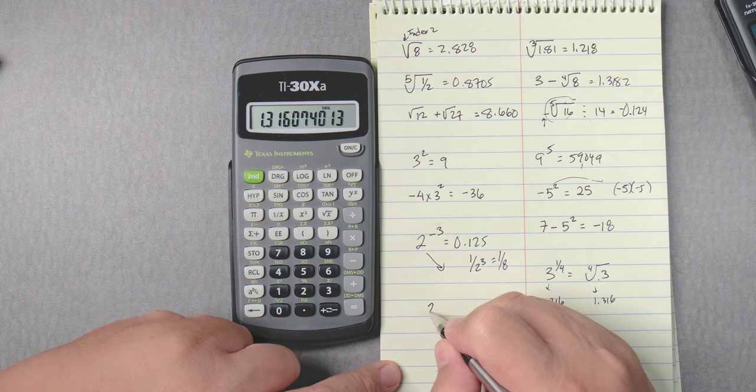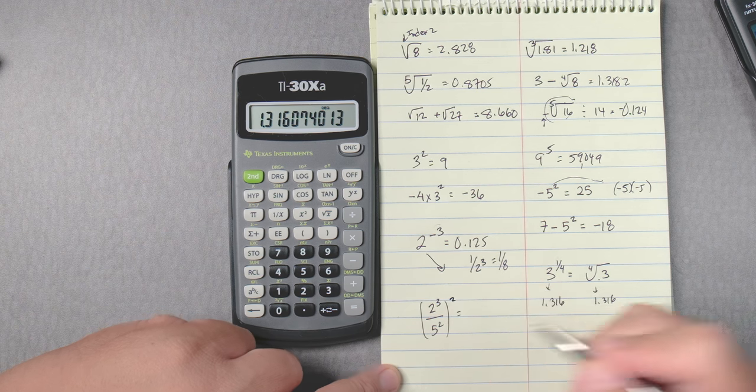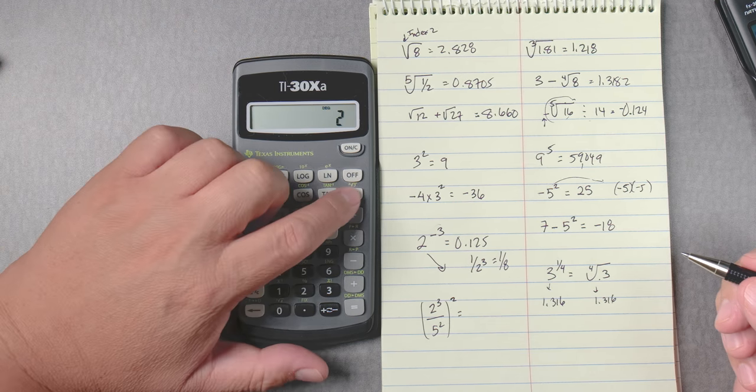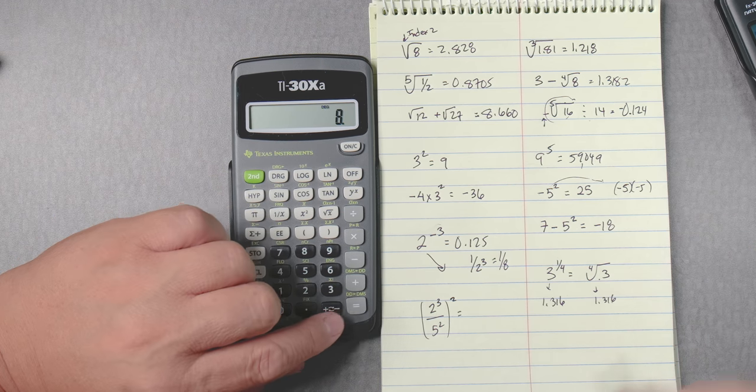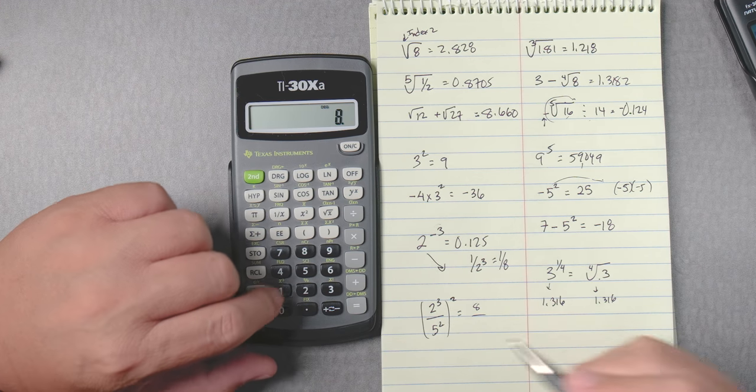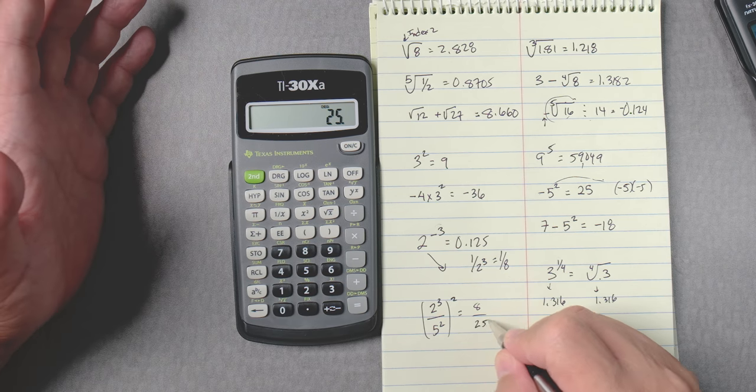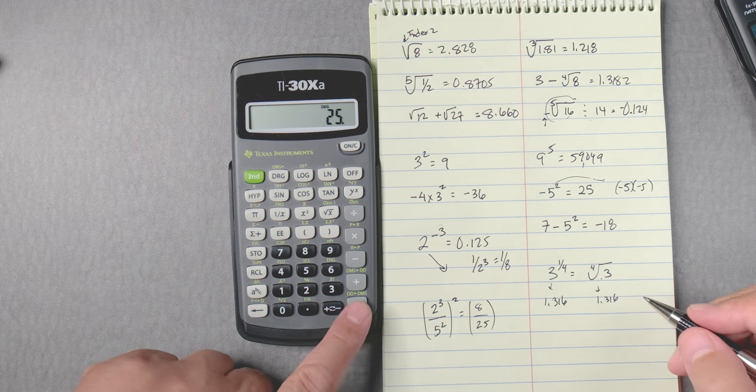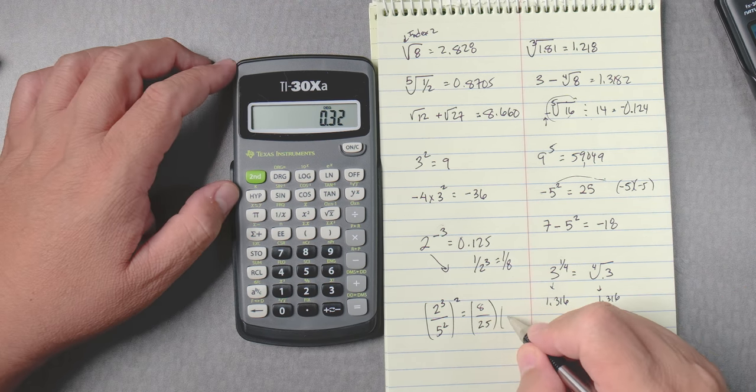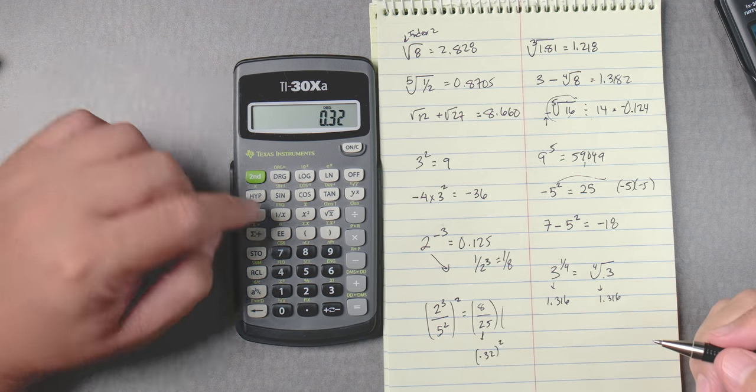This one, 2 thirds over 5 squared to the second power. If we go 2 y to the x 3 equals that's important so we got an 8, divided by 5 squared. That automatically presses equals, and we press division already equals, that's going to give me 0.32 and we need to square it.